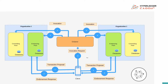When the orderer gets a well-formed transaction, it contains three things: first is the read-set/write-set, second is the endorser signature, and third is the channel ID. The orderer gets transactions from different clients, enqueues them on a per-channel basis, and once as per the configuration defined in the genesis block for batch time and batch size, the orderer creates a block, signs that block with its own signature, and delivers it to all the committing peers through the Gossip Dissemination Protocol.